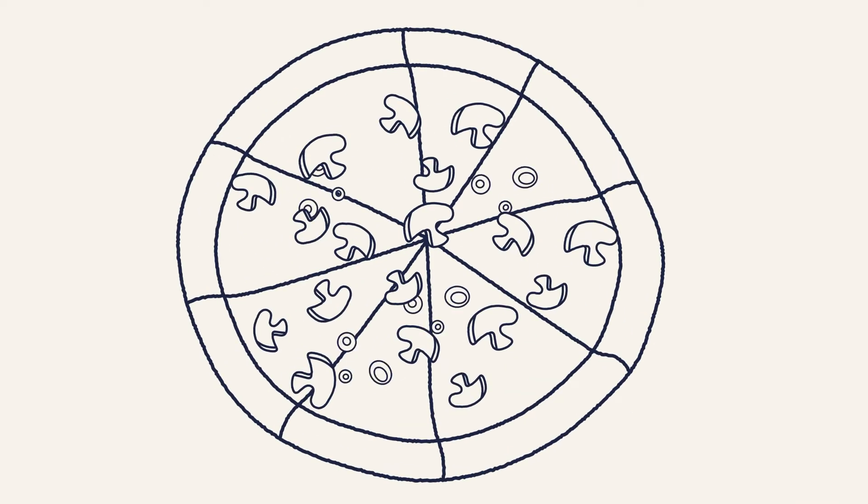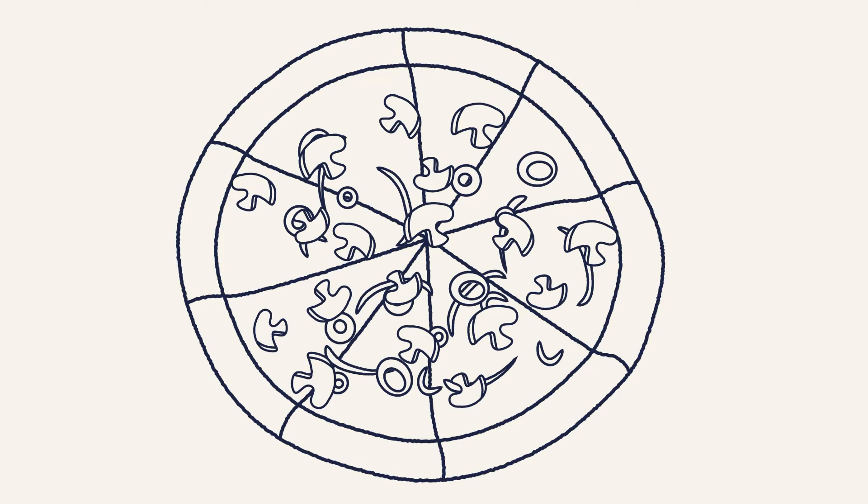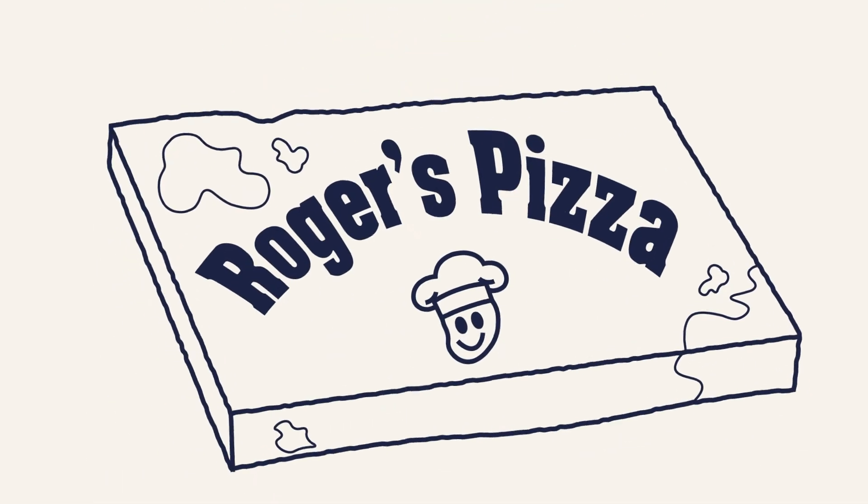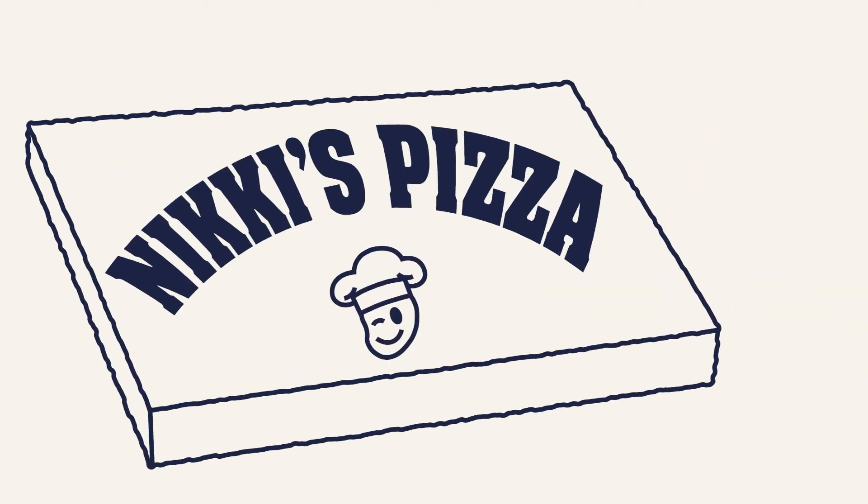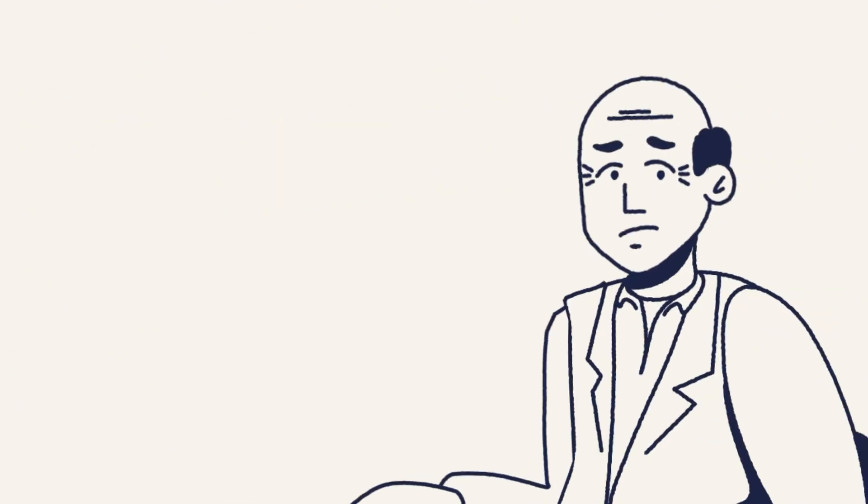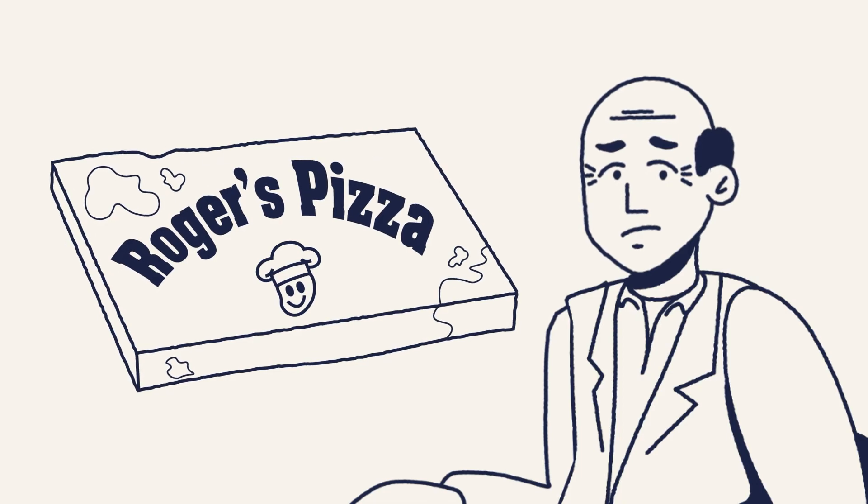This time, you order that same veggie pizza, mushrooms, olives, and onions, and you receive a pizza with mushrooms, olives, and onions on it. But this pizza is from a different pizza parlor, not the one you ordered from. This pizza parlor is new, and you are not sure if you will like their recipe.